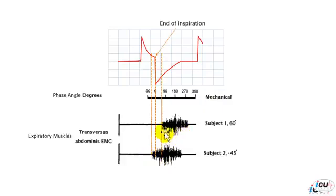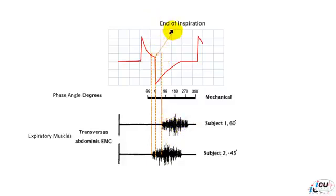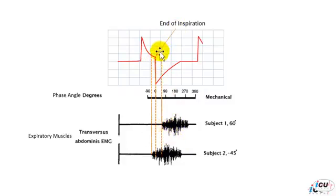As opposed to subject 1, where the expiratory muscle activities started after a delay from the end of inspiration. So this is a delayed termination — the ventilator terminated the breath, however the patient did not start exhaling till later.